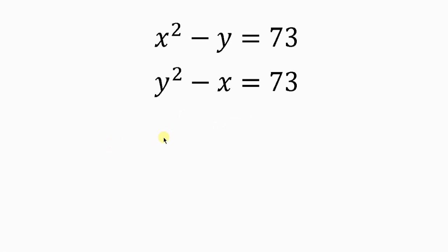What's going on everybody? Welcome back to my YouTube channel. Let's solve this math question which says: find the values of x and y for which x squared minus y is equal to 73, and y squared minus x equal to 73.